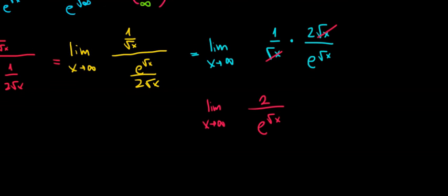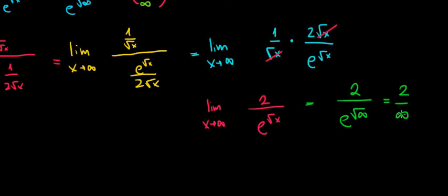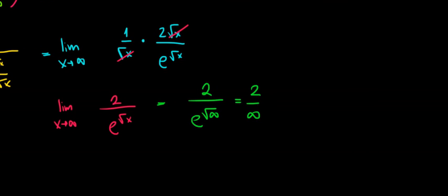Now let's substitute infinity into x. We have 2 divided by e to the power square root of infinity, which is a very large number approaching infinity. 2 divided by a very large number is going to be very, very close to 0. Since the limit shows the tendency — where we are going — we are going to 0. And that's it, we are done.